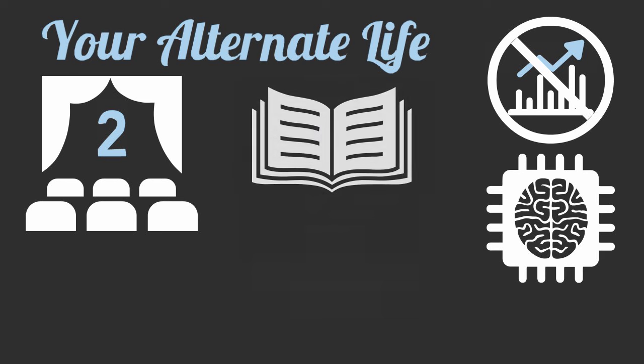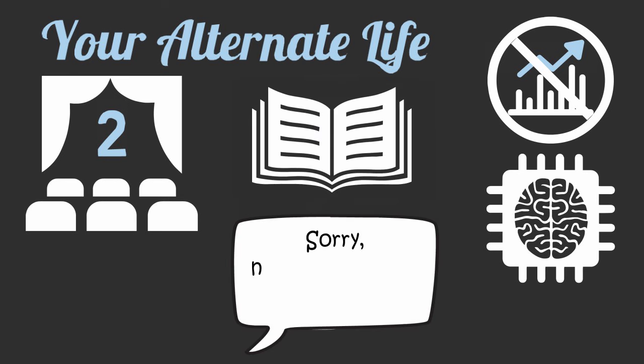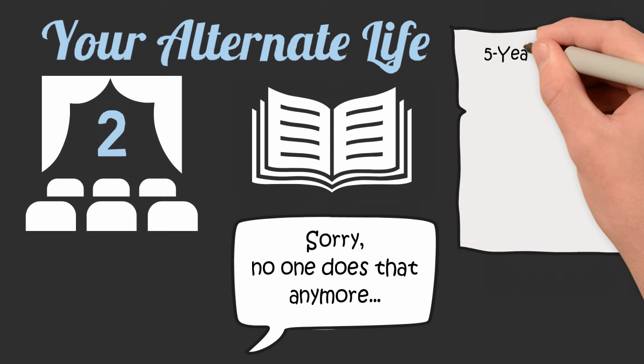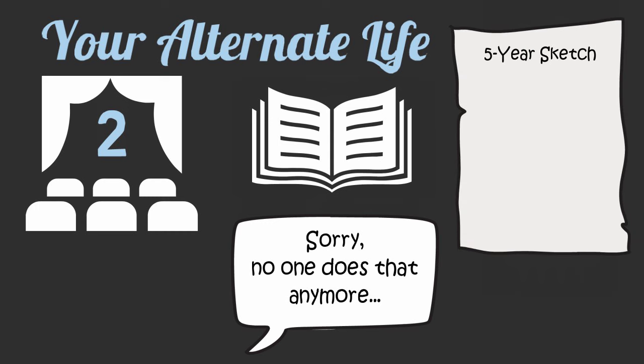If you're an author and write novels for a living, imagine that suddenly everyone stopped reading novels and there was no way to make money writing novels anymore. What would you do? Again, use the items in your good time journal to create a five year sketch of life number two.